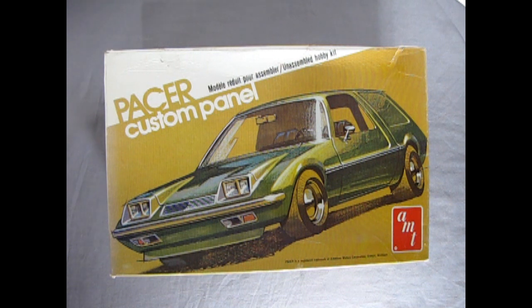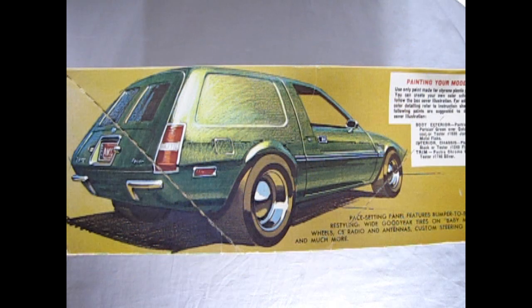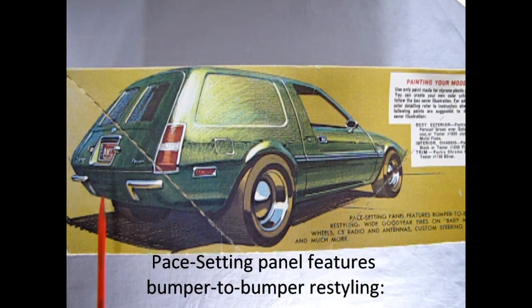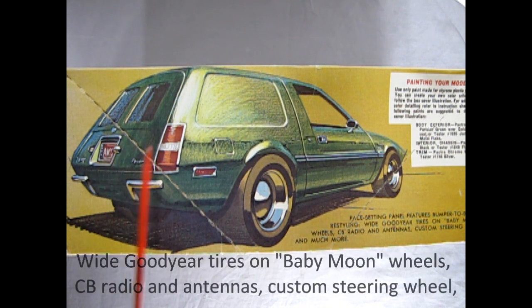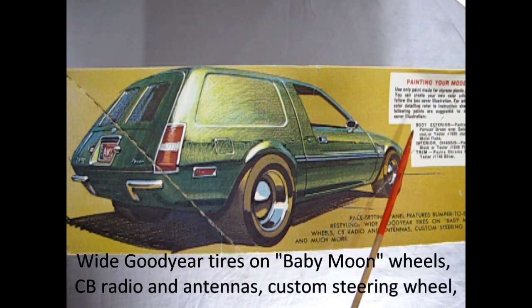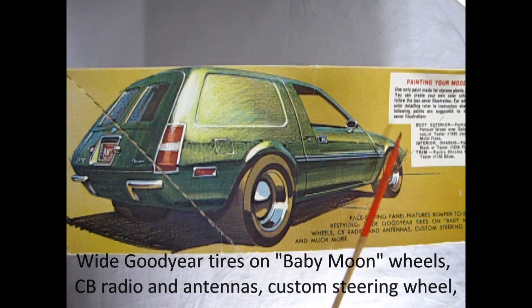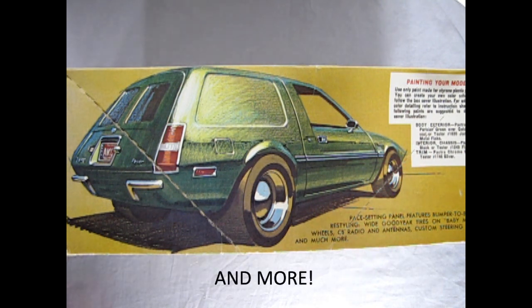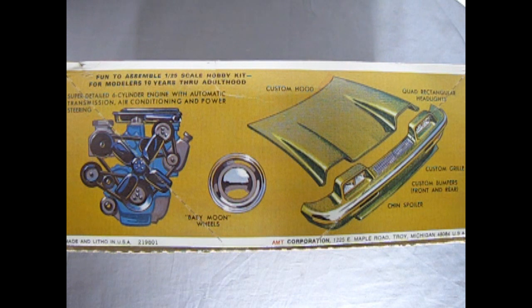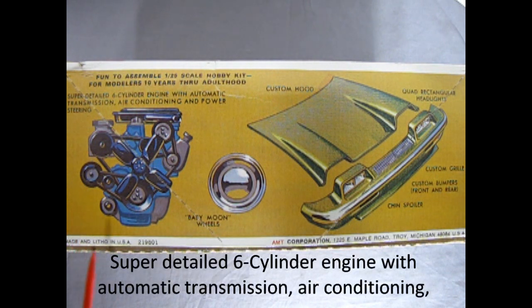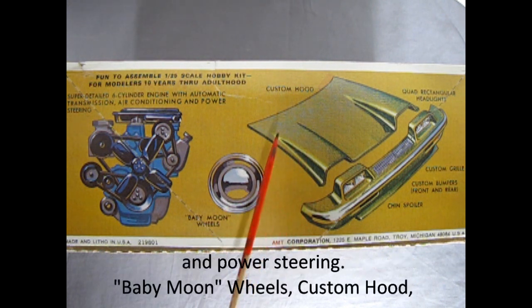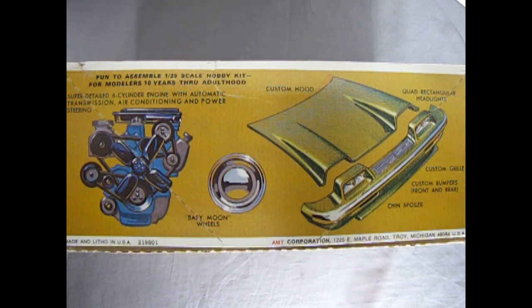It's almost sort of got a Chevy Monza front end going on in here. And here we have a nice side profile of our Pacer, this of course being an artist's rendition of it and you can see the nice panels in the side as well as these really funky doors. And over here is a little box saying about painting your model and it calls out for Pactra and Testers paints. And up on this side of the box we can see this amazing American Motors straight-six engine, baby moon wheels, the amazing custom hood and the custom grille with custom bumpers and a chin spoiler.